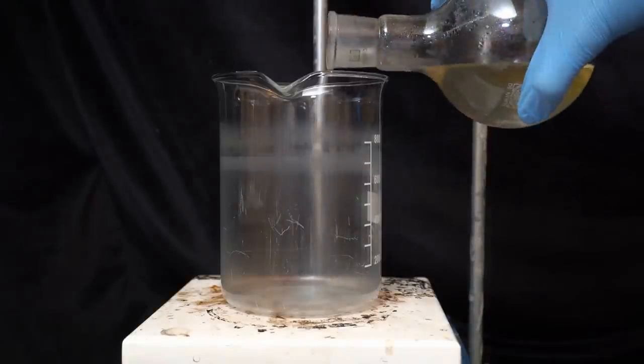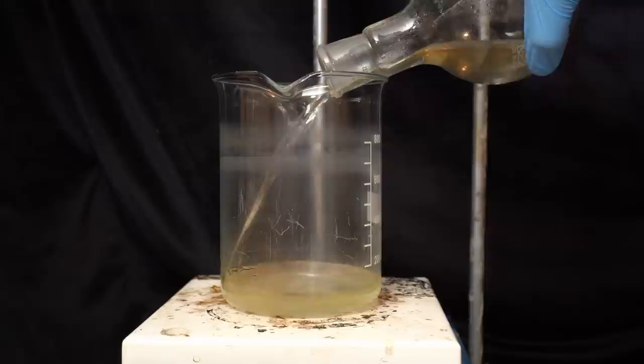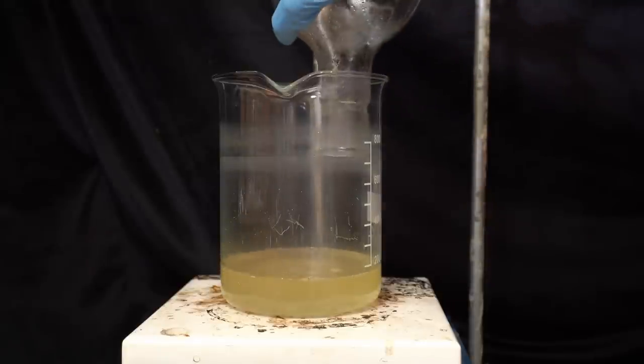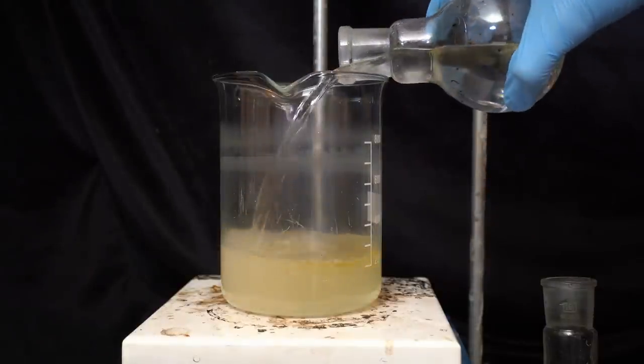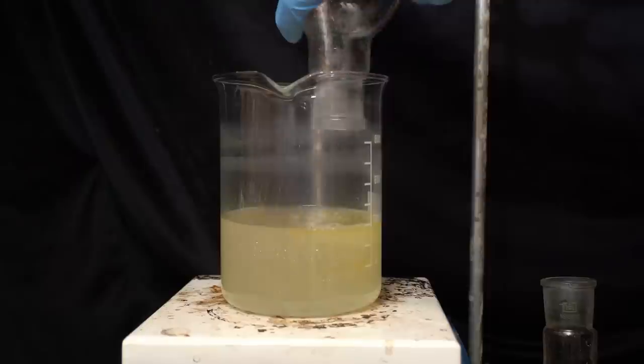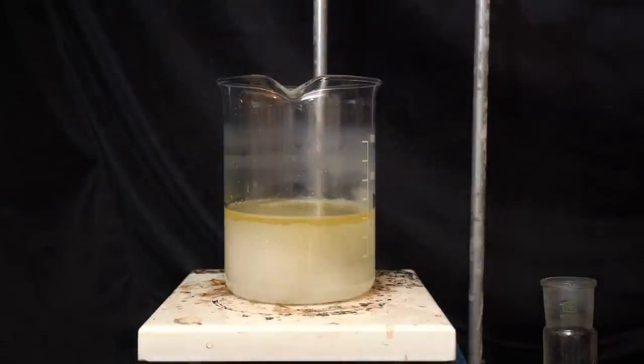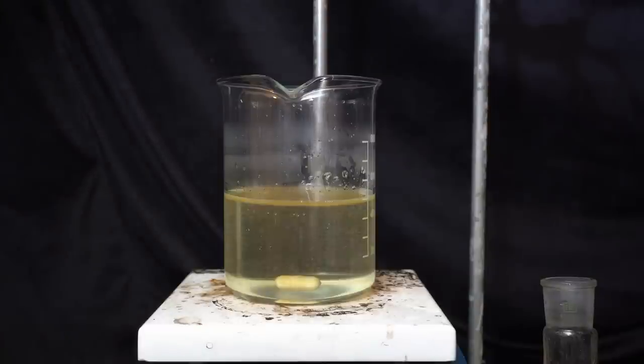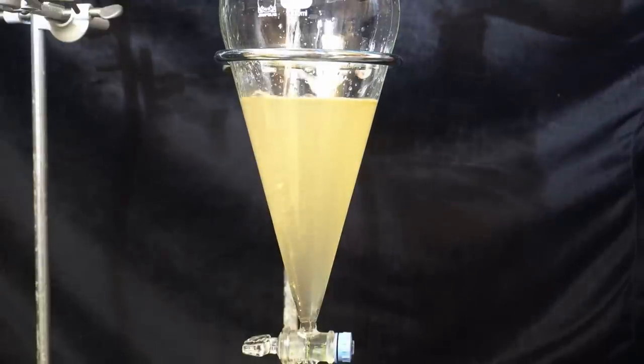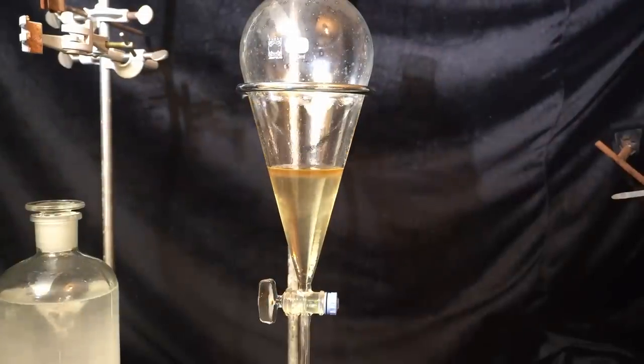Both of the fractions are combined in a large beaker. There's some ethanolamine in these fractions, which you can easily tell by the alkaline pH and the nasty ammonia smell. Therefore, I neutralize the solution with some dilute hydrochloric acid. I then pour the solution into a large separatory funnel and separate the top organic layer.